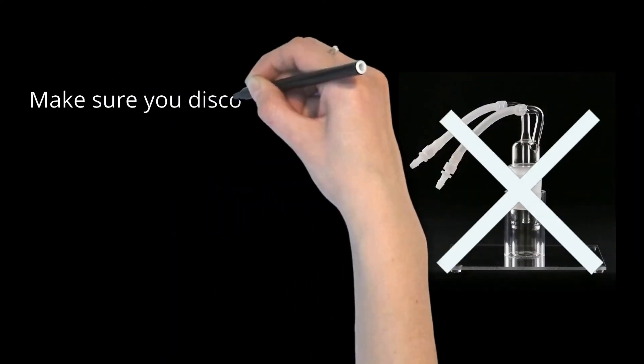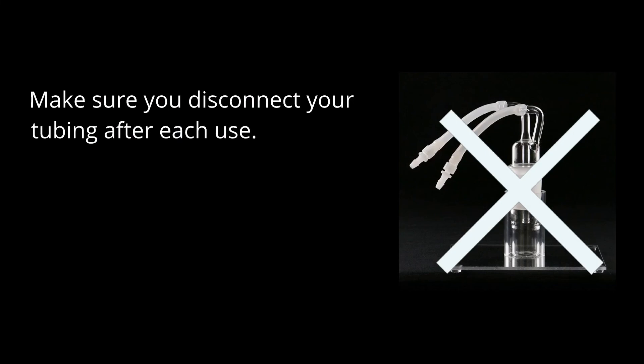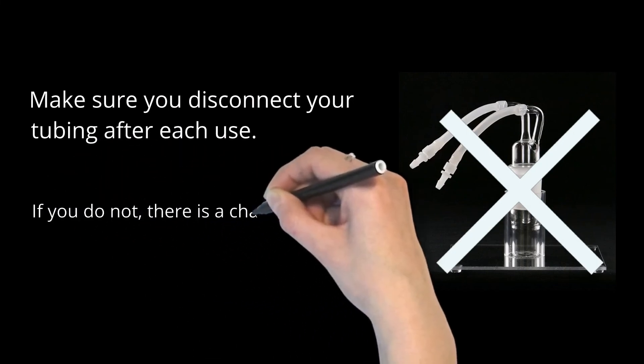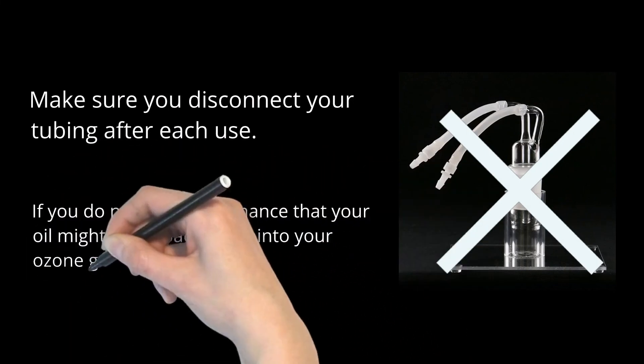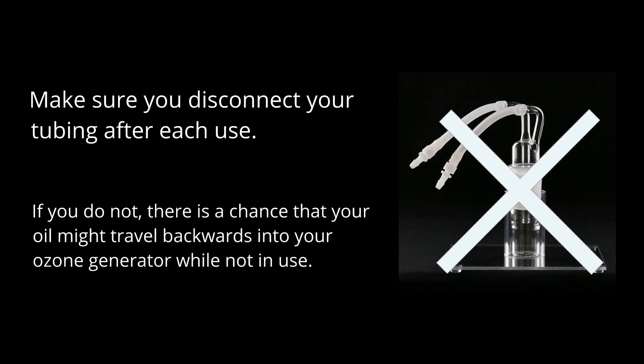If you are not using an oil trap with your bubbler, make sure you disconnect your tubing after each use. If you do not, there is a chance that your oil might travel backwards into your ozone generator while not in use.